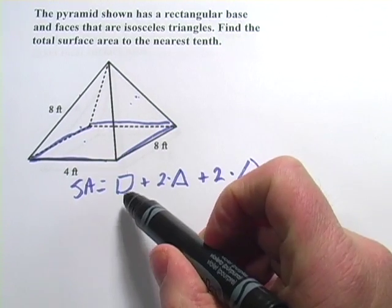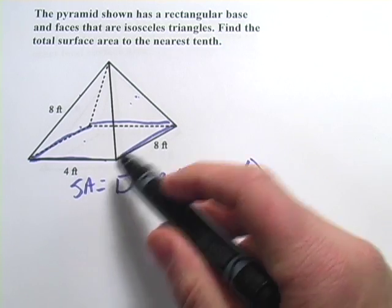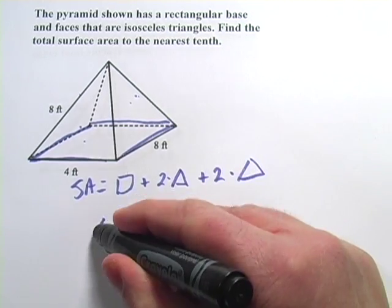Well, let's start with this rectangle. That's pretty easy. The area of a rectangle is length times width. In this case, four times eight.